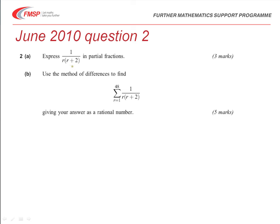Then the second part is then going to apply that answer in using the method of differences to find the summation of 1 over r(r+2) between r equals 1 and 48. Let's see how we get on with the first part of this question.